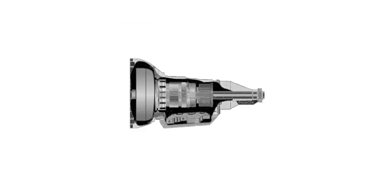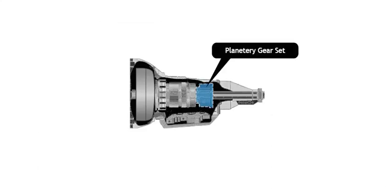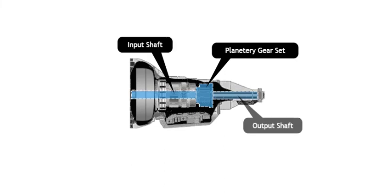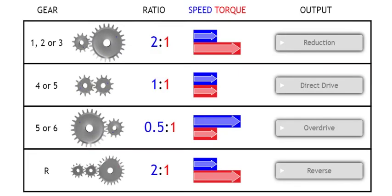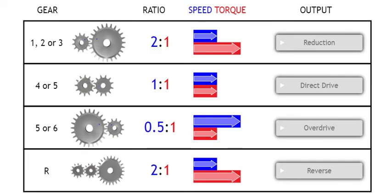An automatic transmission uses planetary gear sets to create different gear ratios by holding different parts of the gear set stationary and changing the inputs and outputs. Four types of ratios can be obtained: reduction, direct drive, overdrive, and reverse.